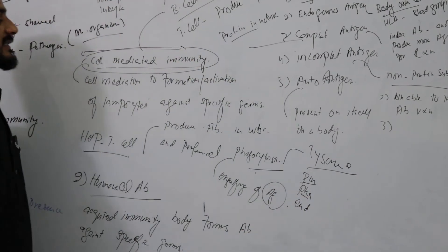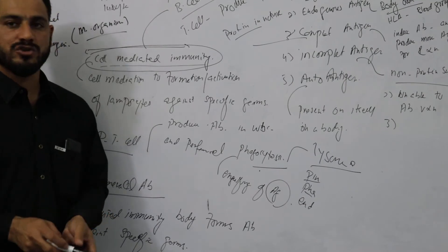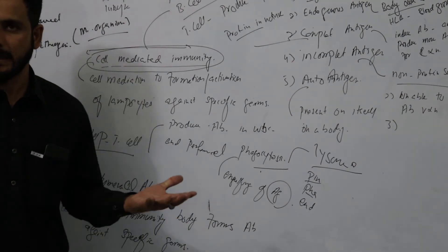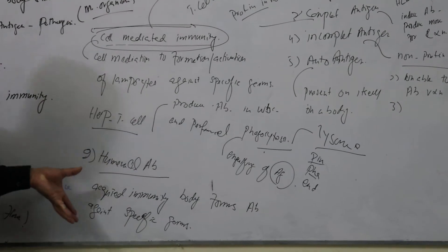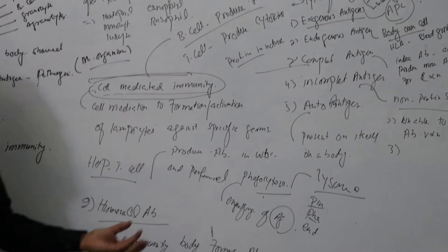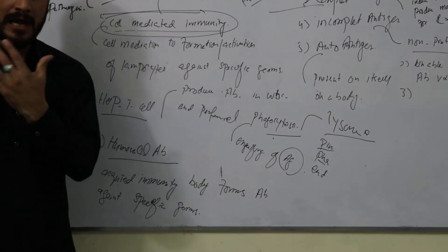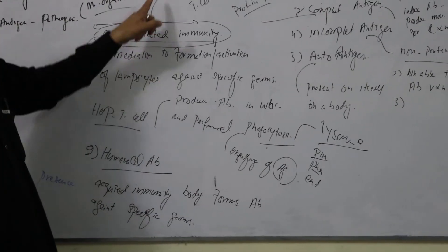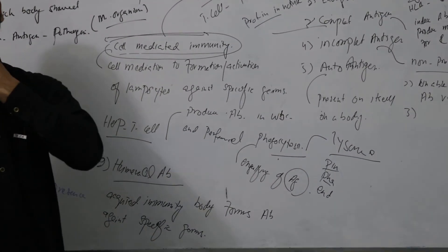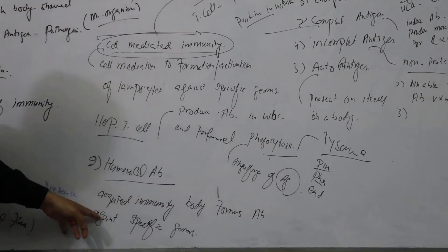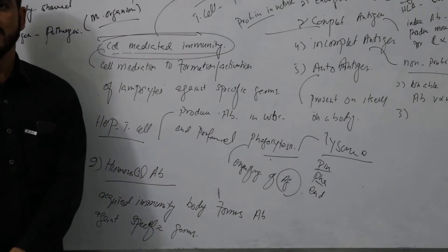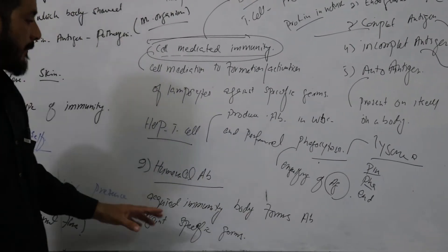Acquired immunity is when your body produces a specific antibody against a specific germ. For example, if our body encounters corona, then a specific antibody will be produced against corona. If our body has a throat infection or this type of disease, a specific antibody will be produced. These are types of antibodies in which our body specifically produces against a specific infection.